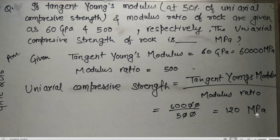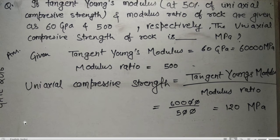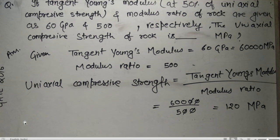If you know the formula, the question is very easy. Remember: uniaxial compressive strength = tangent Young's modulus / modulus ratio. This is from GATE 2016.